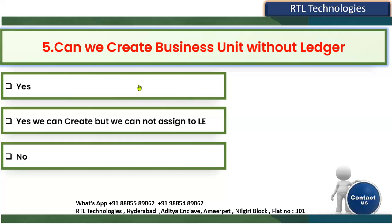The first option says yes, it is possible. The second option says yes, we can create but cannot assign it to a legal entity. The third option says no, we cannot create without a ledger. The first option is also correct, but the second is the most complete answer: yes, we can create a business unit without a ledger, but to assign it to a legal entity, the ledger must already be created and associated with that legal entity.